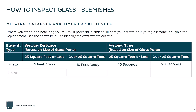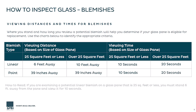But if you've spotted a point blemish, the viewing distance will always be 39 inches away. Only the amount of viewing time will change. If the unit is smaller than 25 square feet, view the glass for 10 seconds to inspect. If the unit is larger than 25 square feet, view the glass for 20 seconds. If the blemish cannot be found — success! You have a quality PGT product ready for installation or daily use.